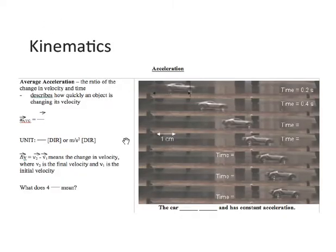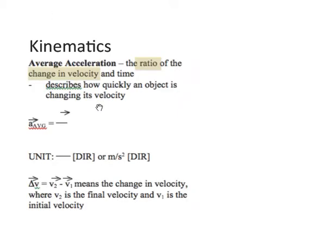For those of you following along in your notes, please turn to this page here. Average acceleration is the ratio of the change in velocity to time. It describes how quickly an object is changing its velocity. So there's our official formula for acceleration. Please fill that in your notes. Delta V over delta T.